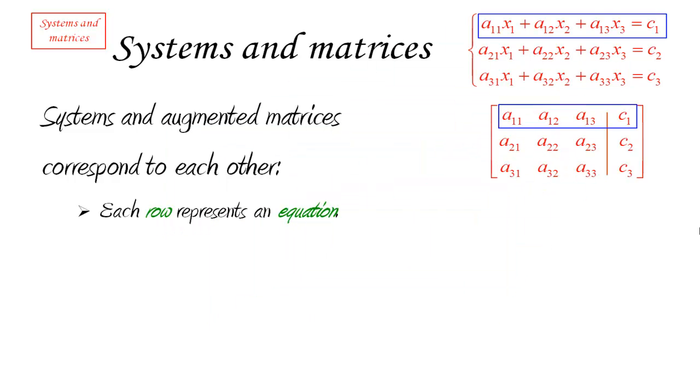So the top equation of the system has the same information as the top row of the corresponding matrix. And if I look down to the second equation of the system, that corresponds to the second row of the matrix, and so on.